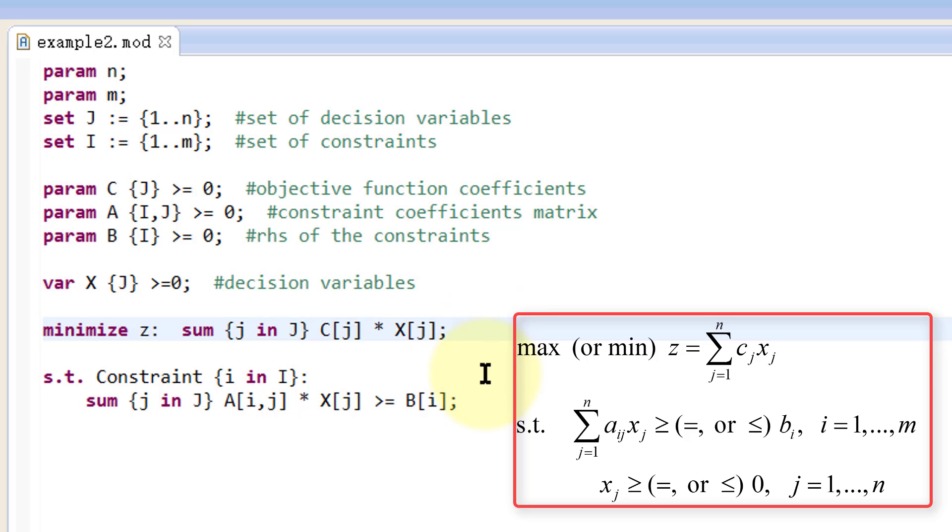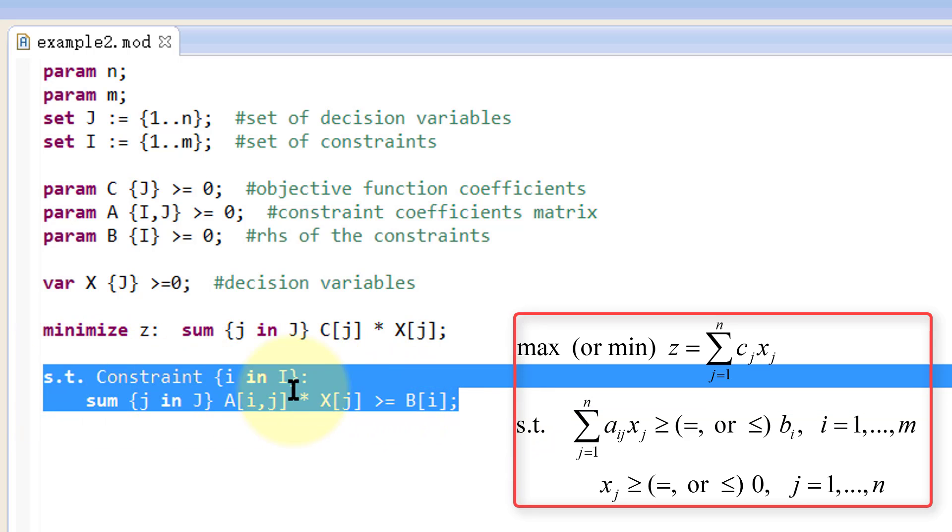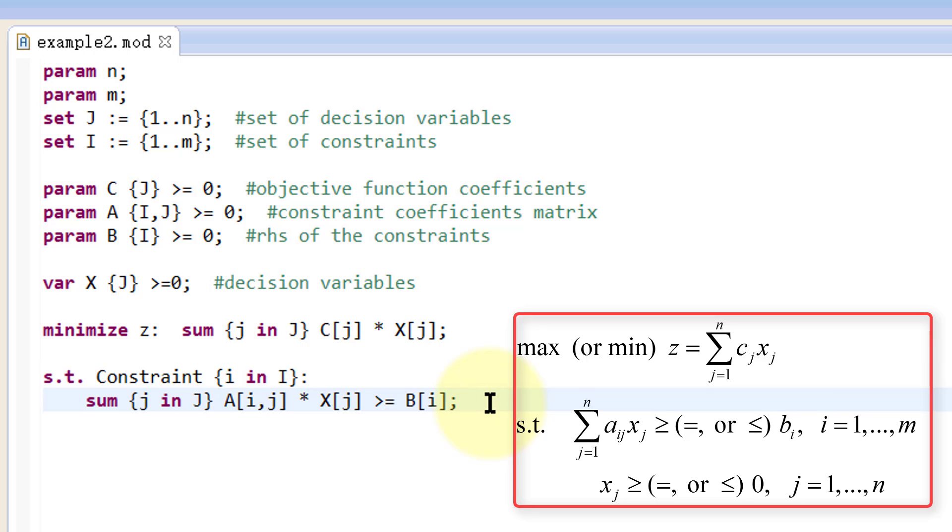We have a total of m constraints. Lowercase i in uppercase I means the constraints are indexed from 1 to m. For each constraint i, we are trying to sum up the contributions of every decision variable xj by multiplying it with the coefficient aij. Each constraint is greater than or equal to the right-hand side bi. These two lines of code work like a loop. It will take care of all the constraints.